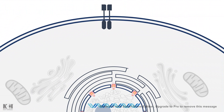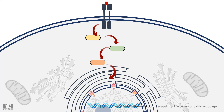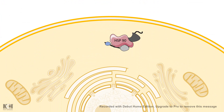So far we have seen signal transduction paradigms where an external ligand binds to the extracellular receptor on the membrane surface, and then a cascade of second messengers and intermediate molecules relay the signal to the nucleus leading to transcriptional change. But in case of nuclear receptors, things are different.